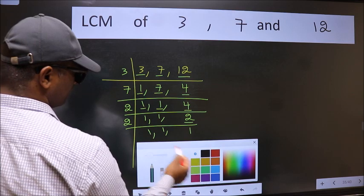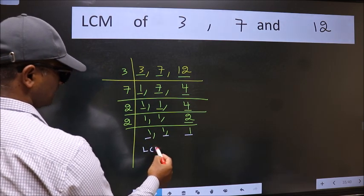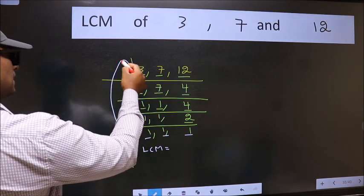So we got 1 in all the 3 places. So our LCM is the product of these numbers.